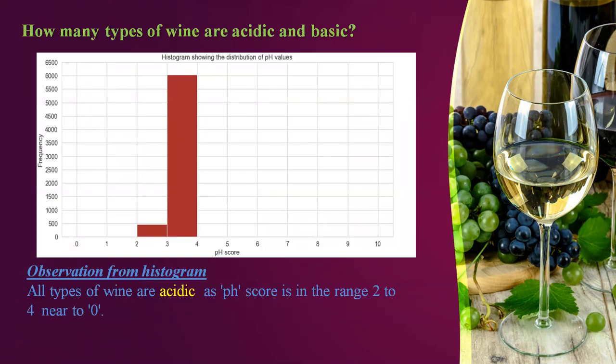How many types of wines are acidic and basic? Based on the histogram, we observe that all types of wine in our dataset are mostly acidic, as the pH — that is, the presence of hydrogen in the wine — scores in the range of 2 to 4 on a scale of 0 to 14, where greater than 7 is generally considered alkaline.